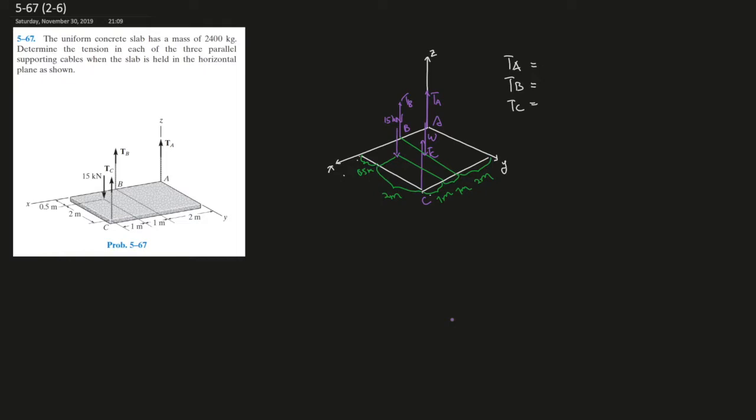First of all, let's draw the free body diagram and put all of the forces in there. Remember, the 2400 kg has a weight, so you can calculate the weight out here. W equals 2400 times 9.81. If you put that into a calculator, it should give you 23544 Newtons.